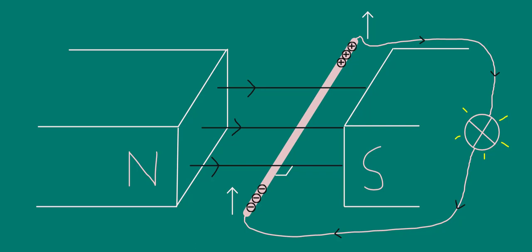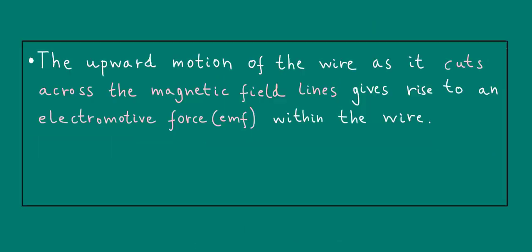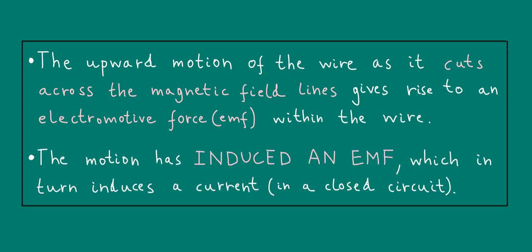The black arrows drawn in show the direction in which conventional current would flow. Electrons would flow in the opposite direction. What we can say is that the upward motion of the wire, as it cuts across the magnetic field lines, gives rise to an electromotive force, or EMF, within the wire. In other words, the motion has induced an EMF, which in turn induces a current in a closed circuit. This is one type of electromagnetic induction, what I've called cutting field lines, and which is what this video is all about.